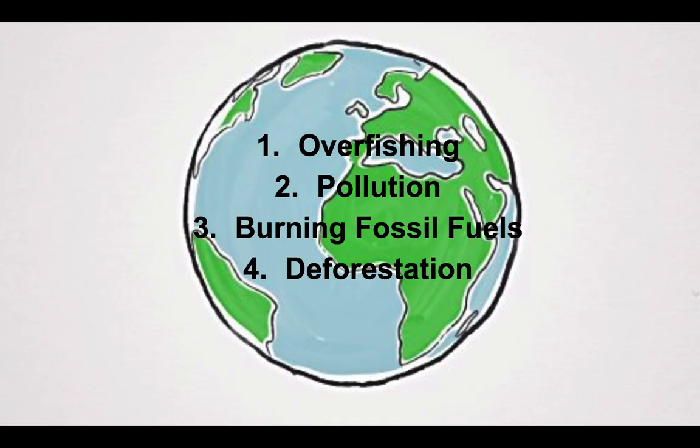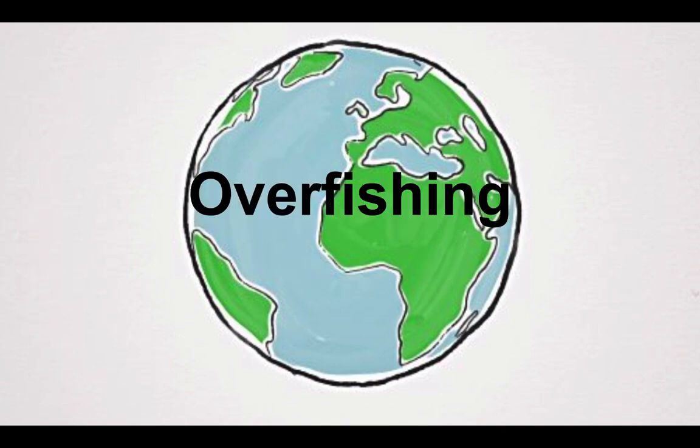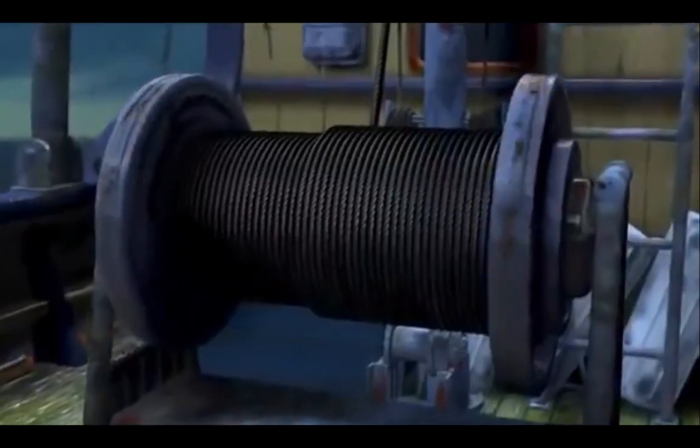First we're going to discuss overfishing. So what's overfishing? Well, it's the process of removing marine life or species of fish from bodies of water to where the rate of species cannot repopulate in a timely manner, making the species underpopulated in a certain area. As you can see here from the movie Finding Nemo, this is a perfect example of overfishing — a big boat using a large net to fish out as many fish as they can in one area.